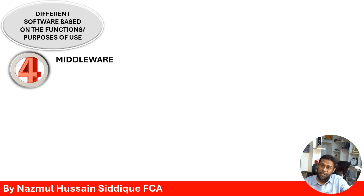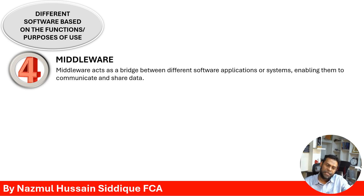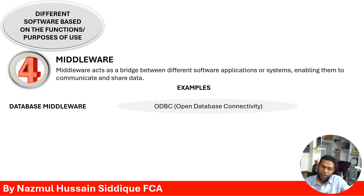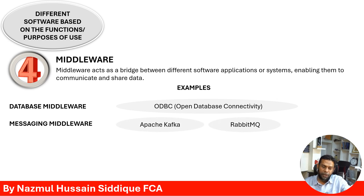The next category is middleware. Middleware acts as a bridge between different software applications or systems, enabling them to communicate and share data. Examples include database middleware like ODBC (Open Database Connectivity), messaging middleware such as Apache Kafka and RabbitMQ, and API gateways such as Kong or Amazon API Gateway.